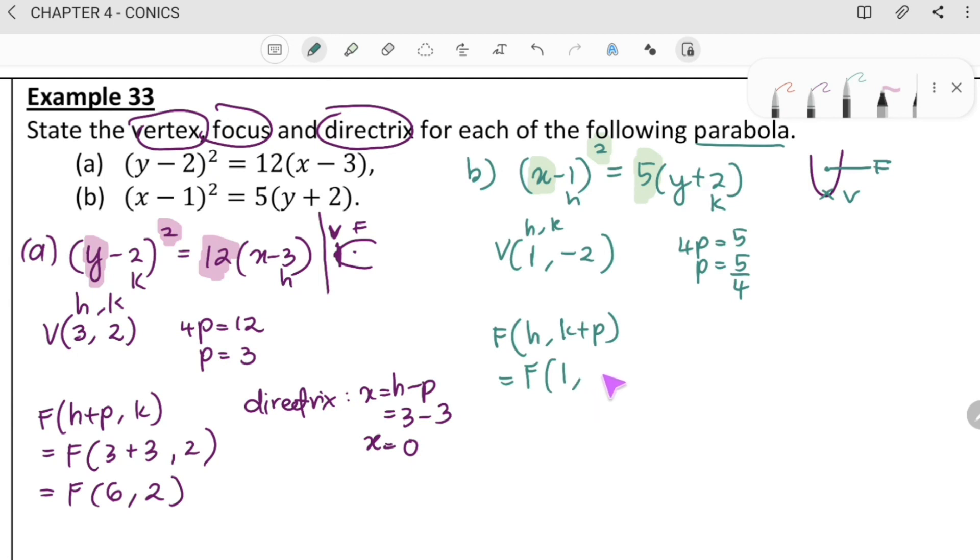So, H is 1, K is negative 2. And P is 5 over 4. Finally, you will get the coordinate F at 1, negative 3 over 4. So, if F, if focus is plus, so directrix will be minus. Okay. So, Y equal to K minus P. So, K is negative 2. P is 5 over 4. So, you will get this one.